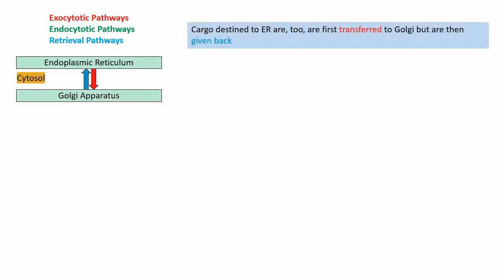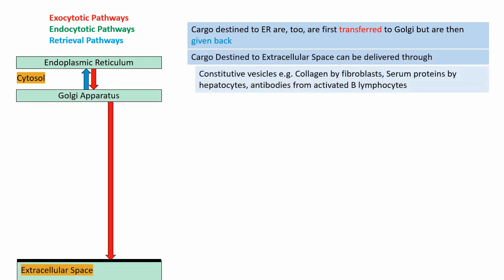Retrieval pathways return some of the components that were taken from an organelle in the first place. Cargo destined to endoplasmic reticulum are to first transfer to Golgi but are then given back. Cargo destined to extracellular space can be delivered through either constitutive vesicles. Examples include collagen by fibroblasts, serum proteins by hepatocytes, antibodies from activated B lymphocytes.